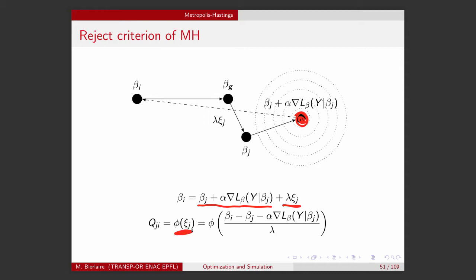The xi is generated from the random walk. And the probability to do that is given by the PDF of xi_j. And if you derive xi_j from this equation, well, you obtain this.